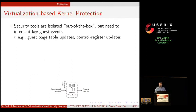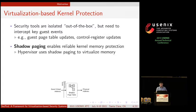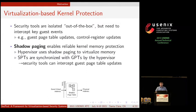To address this problem, researchers have proposed using virtualization to isolate security tools. This out-of-the-box isolation can use the hypervisor to intercept key kernel events, such as guest page table updates or control register updates. To intercept the guest kernel page table update, shadow paging is used. In early hypervisor designs, developers used shadow page tables to virtualize memory, and the hypervisor maintains shadow page tables synchronized with the guest page tables.